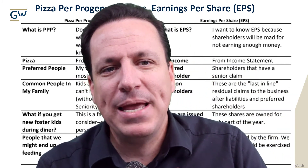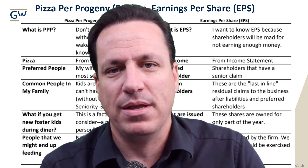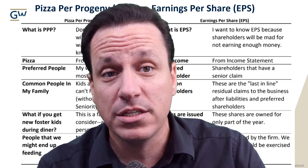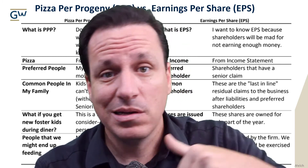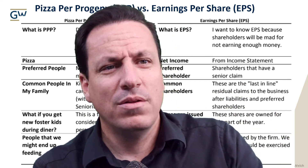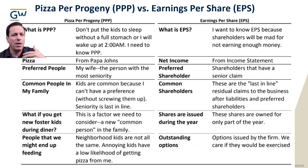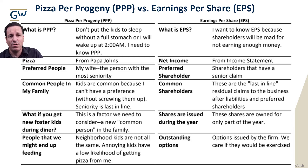Earnings per share is like pizza for shareholders. As a CEO, you need to keep your shareholders happy — they have to get enough pizza, enough earnings per share. If they don't get enough, guess what happens to you as a CEO? You get fired. So what is pizza per progeny? Don't put your kids to sleep without a full stomach or you'll be woken up at 2 a.m. Shareholders will be mad for not earning enough money — they own shares to earn money.